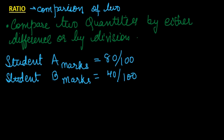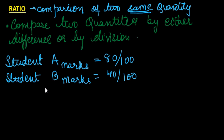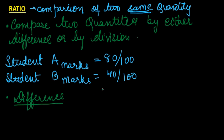We said ratio is nothing but comparison of two same quantities — we will see in detail later what we mean by comparing two same quantities. So let us come back to where we were. We have to compare the marks of student A with marks of student B. First, we can compare by taking a difference.